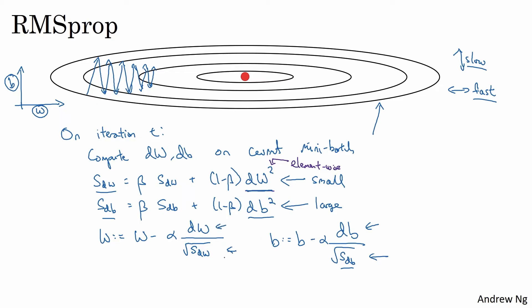Whereas the updates in the horizontal direction are divided by a smaller number. So the net impact of using RMSprop is that your updates will end up looking more like this, that your updates in the vertical direction get damped out, but then in the horizontal direction they can keep going. And one effect of this is also that you could therefore use a larger learning rate alpha and get faster learning without it diverging in the vertical direction.